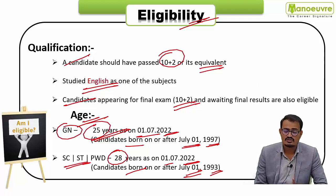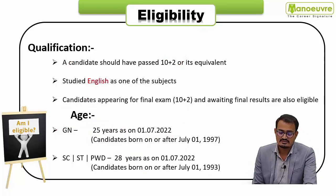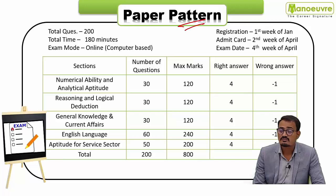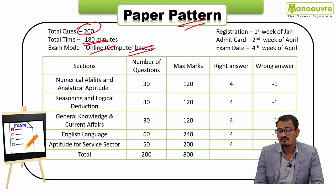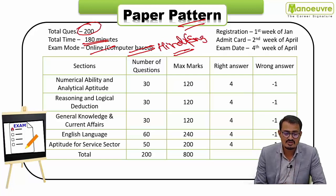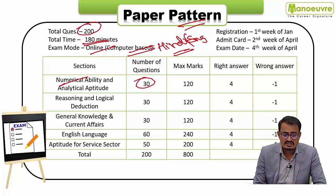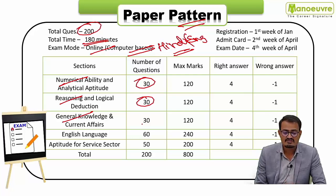Now the paper pattern — very important. There are 200 questions for 180 minutes. The exam mode is completely online and computer-based. The medium is Hindi and English. Sections include: Numerical Ability and Analytical Aptitude (30 questions), Reasoning and Logical Deduction (30 questions), General Knowledge and Current Affairs (30 questions), and English Language (60 questions — a scoring area).